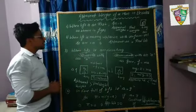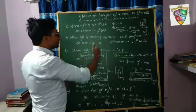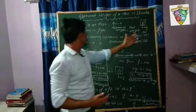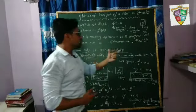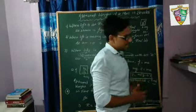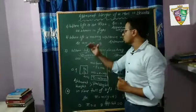In second case, if lift is moving upwards or downwards with uniform velocity, then in that case also apparent weight of the object is same as its real weight because there is no acceleration.